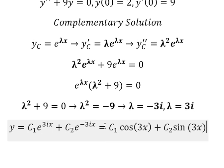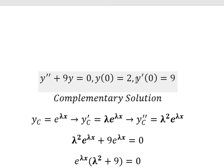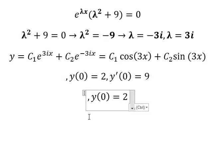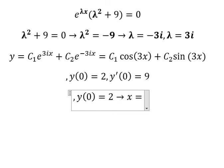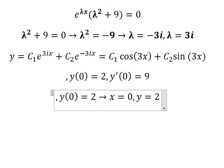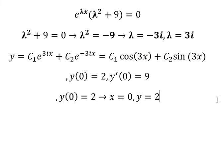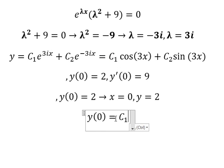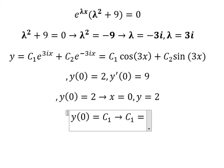Now we go back to apply the initial conditions. We put x equals to zero into the equation. Cosine of zero gives us one, and sine of zero gives us zero, so we are left with only c1, and c1 equals to two because y equals two.